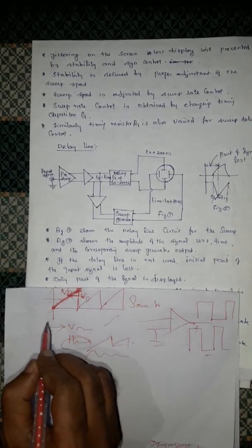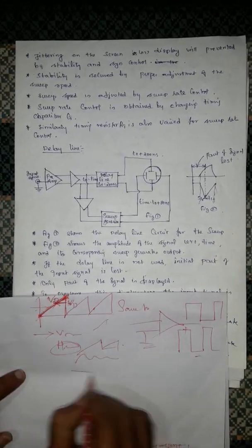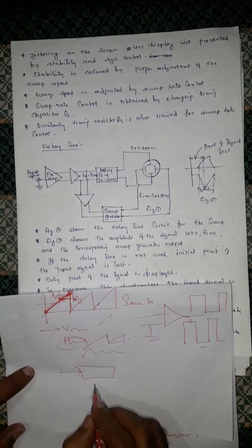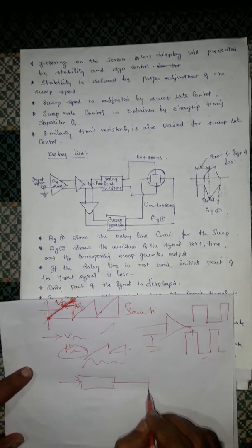Similarly, the same scenario will be there. Usually, the input signal is given to vertical system directly, but this will be directly given to a vertical deflection plate.